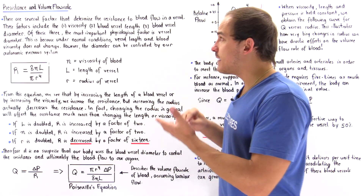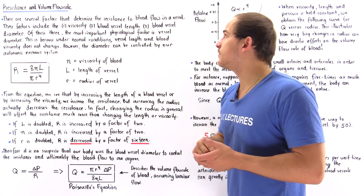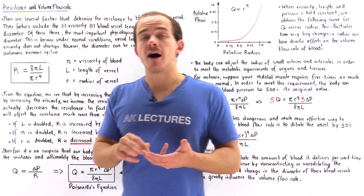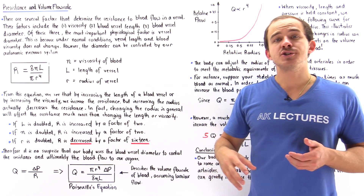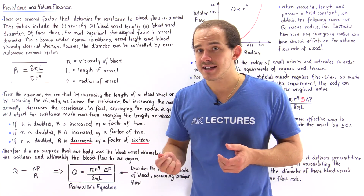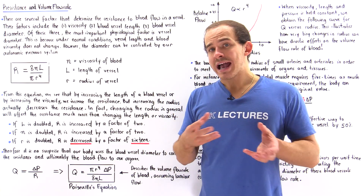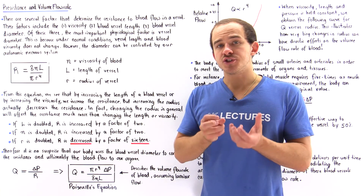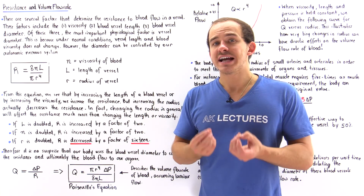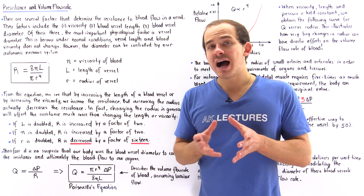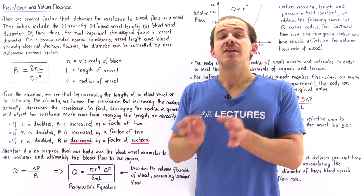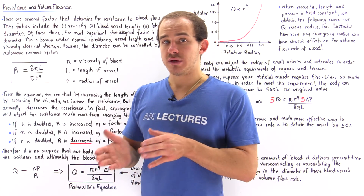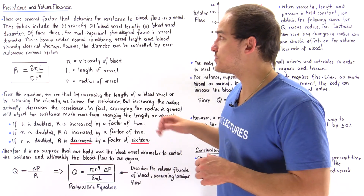There are three different factors that determine the resistance to blood flow in a given blood vessel. Factor number one is the viscosity of our blood. Viscosity is the internal resistance inside the blood that exists because of the attraction between the molecules, particles, and cells found within our blood. The more attraction we have inside the blood between the individual particles, the higher our internal resistance and the greater our viscosity.